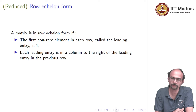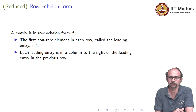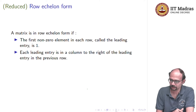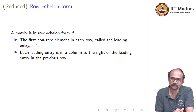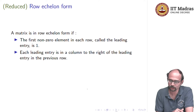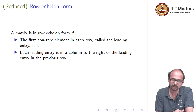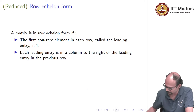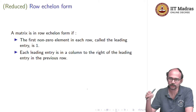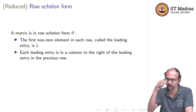The next requirement for row echelon form is that each leading entry is in a column which is to the right of the leading entry in the previous row. In our example, in the first row the 1 was in the first column, and in the second row the 1 was in the second column — you have to go downward and to the right.